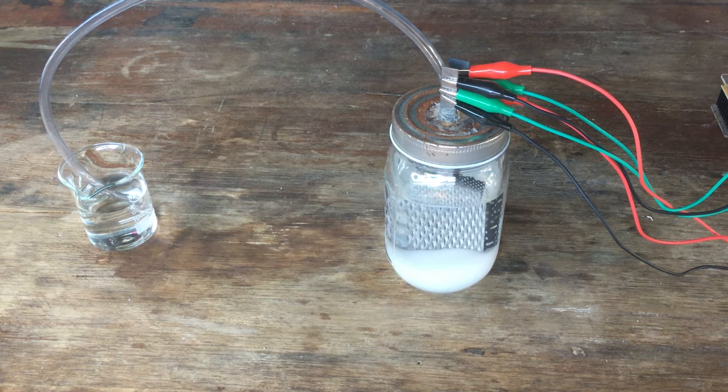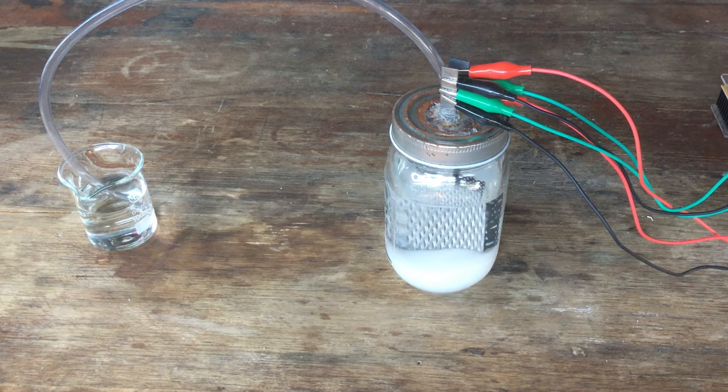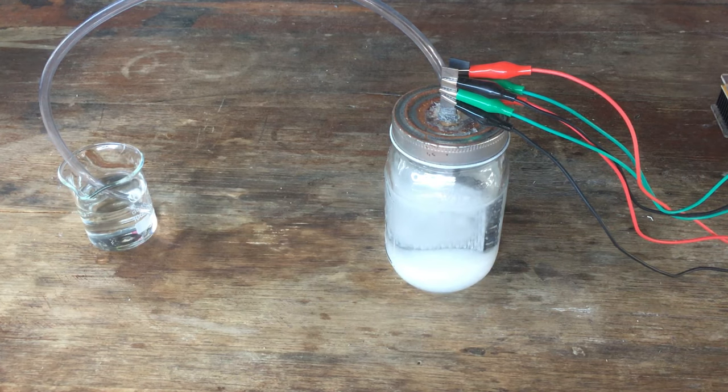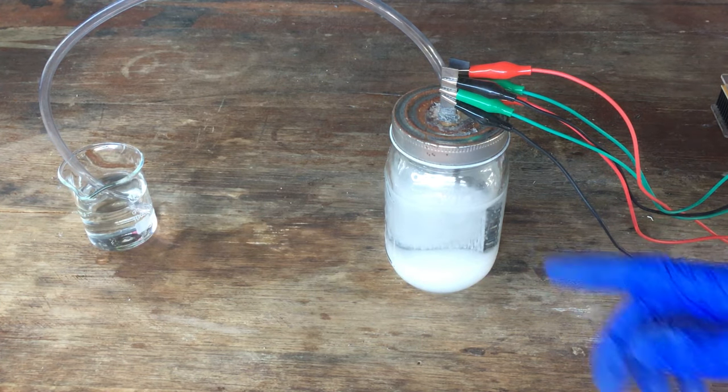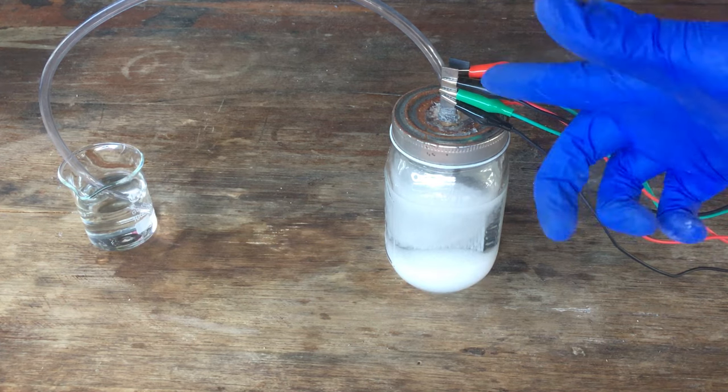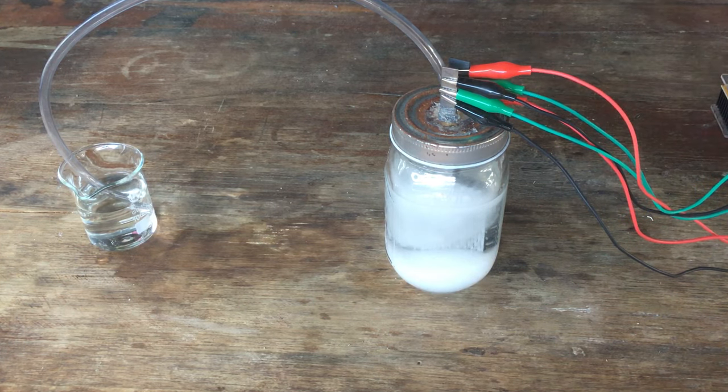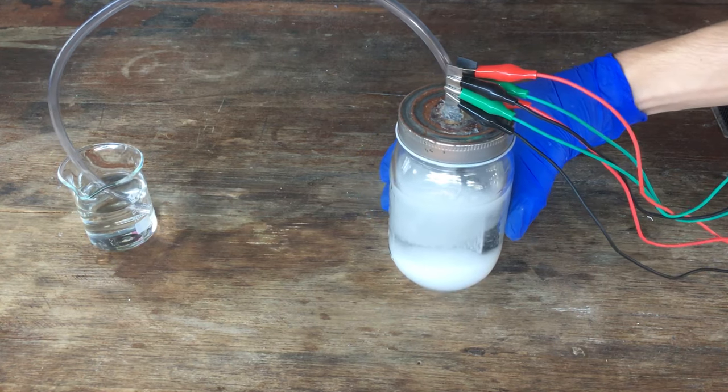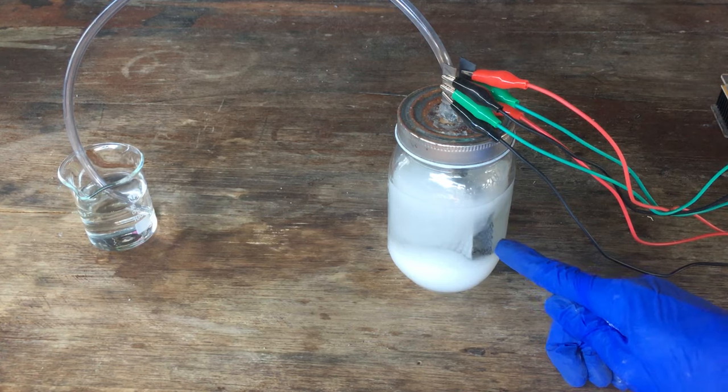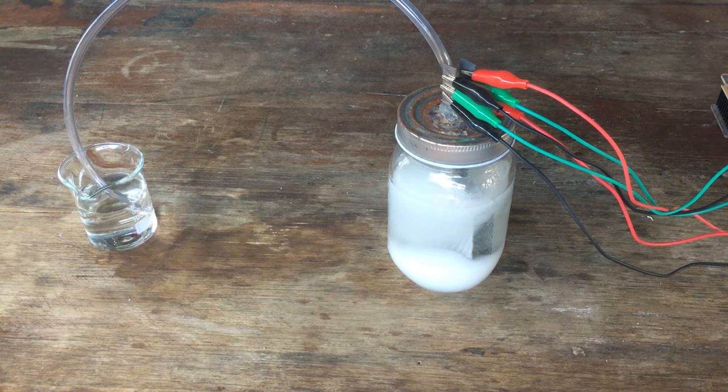It's not showing up very well on camera, but I will turn the current up. There we are, that's approaching 2 amps. You can see a whole bunch of hydrogen being generated on the cathode. That is our negative electrode, the titanium. And maybe if we turn it around a little bit, you can see on the anode over here, there's a little bit of chlorine being generated.